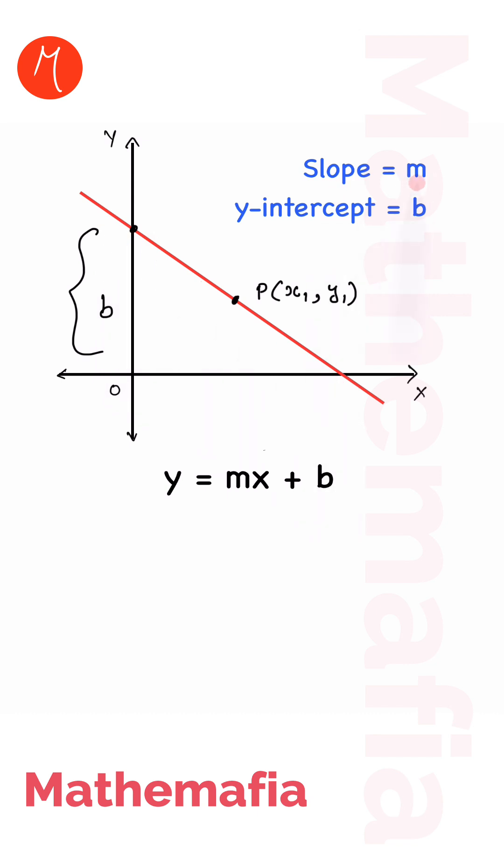We have a line whose slope is given to be m and its y-intercept is b. That means it intersects y at this point such that this distance is b. Then we know that if the slope and the y-intercept is given, the equation of the line is y equals mx plus b. Now let's say this line passes through this point P(x1, y1).